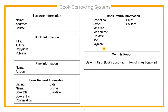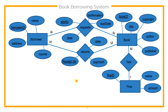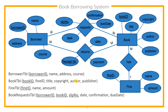The system should be able to display or produce two reports. The first is a monthly report showing the date, titles of books borrowed, and the total number of times each book was borrowed. The second is a borrower's transactions report showing individual transactions for each borrower — what books were borrowed by a specific borrower, when they were borrowed, and when they were returned. Based on this information, we have an entity relationship diagram and the resulting tables.